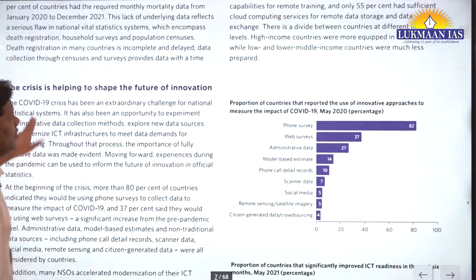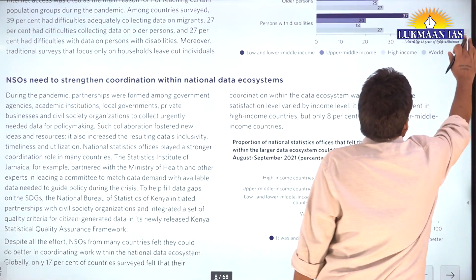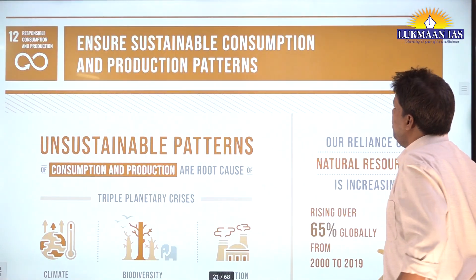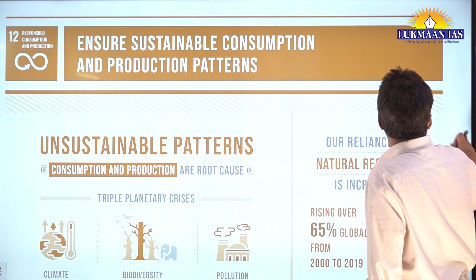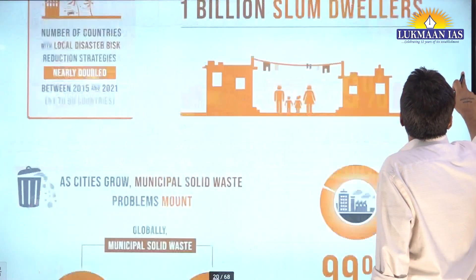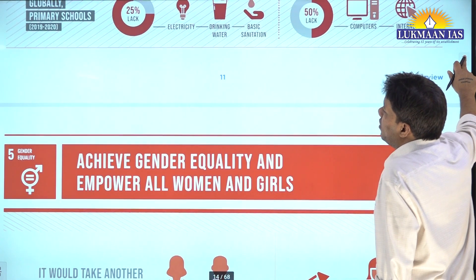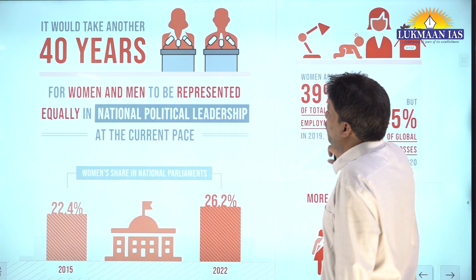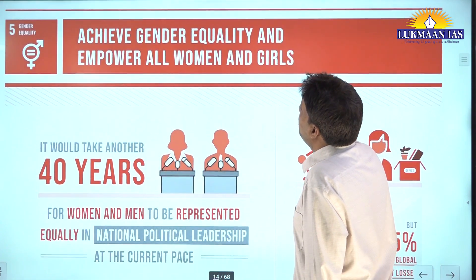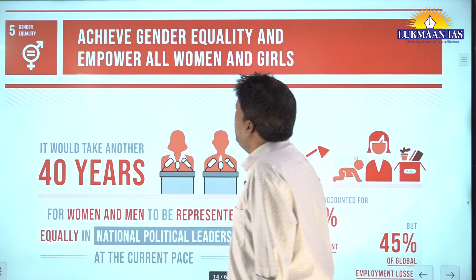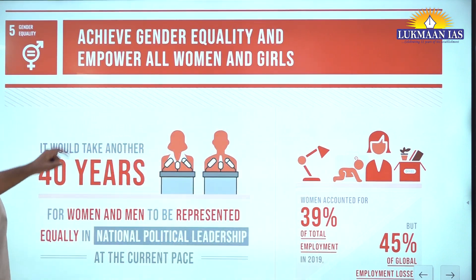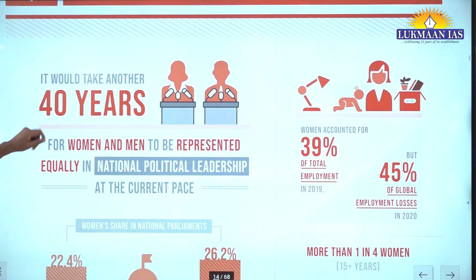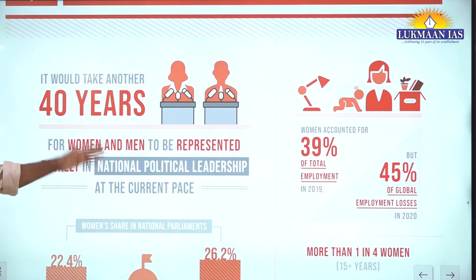I'm going through the SDG Report 2022. Let's look at SDG 5 - gender equality. The report says: achieving gender equality and empowering all women and girls - it would take another 40 years for women and men to be represented equally in national political leadership at the current pace.